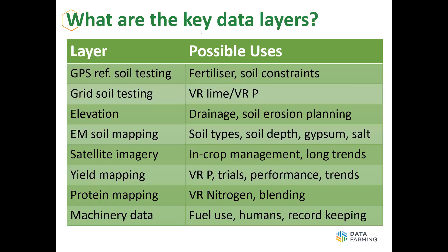Let's start with some of the key data layers. GPS-referenced soil testing is really good for understanding fertiliser requirements and soil constraints — often targeted using a satellite image, a yield map, or an EM map. It's really important to GPS-reference all soil tests going forward. I'm confident to say we should never do blended soil testing again — there is very little point in doing it, and it often asks more questions than it answers. We need to be targeted every time.